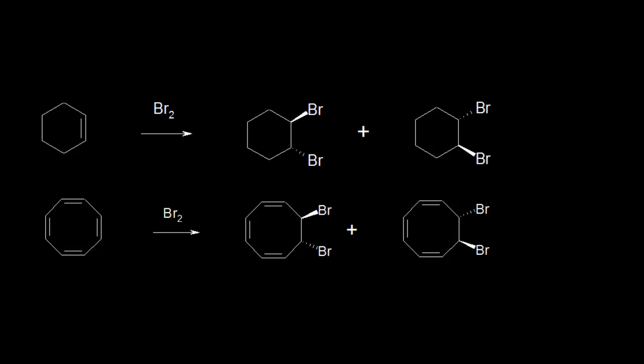In the last video, we observed that benzene exhibits aromatic stabilization. And when chemists first made cyclooctatetraene, which is this molecule right here, they assumed it would react like benzene, because it looks like it has alternating single and double bonds and it has a ring. And so they just assumed that it would behave like benzene.